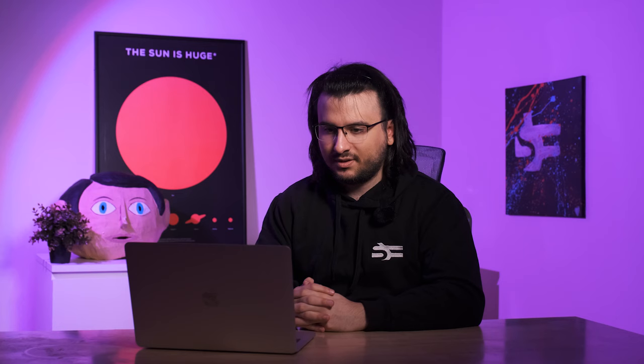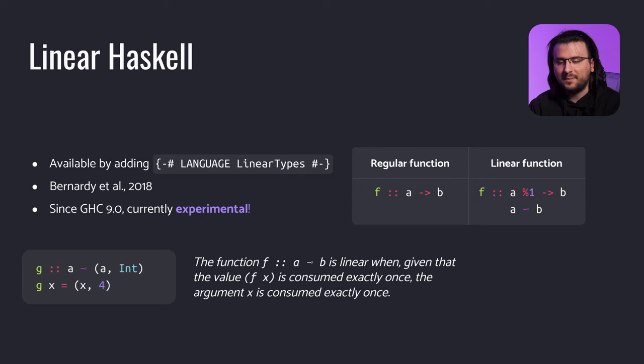Meanwhile, g uses its argument exactly once. To enable linear types, simply add the respective pragma to your module or include it in the default extensions key of your package.yaml file. Linear Haskell was originally described in a paper by Jean-Philippe Bernardi, Arnaud Spiewicz and others in 2018. The extension has been available since GHC version 9 and is currently experimental.